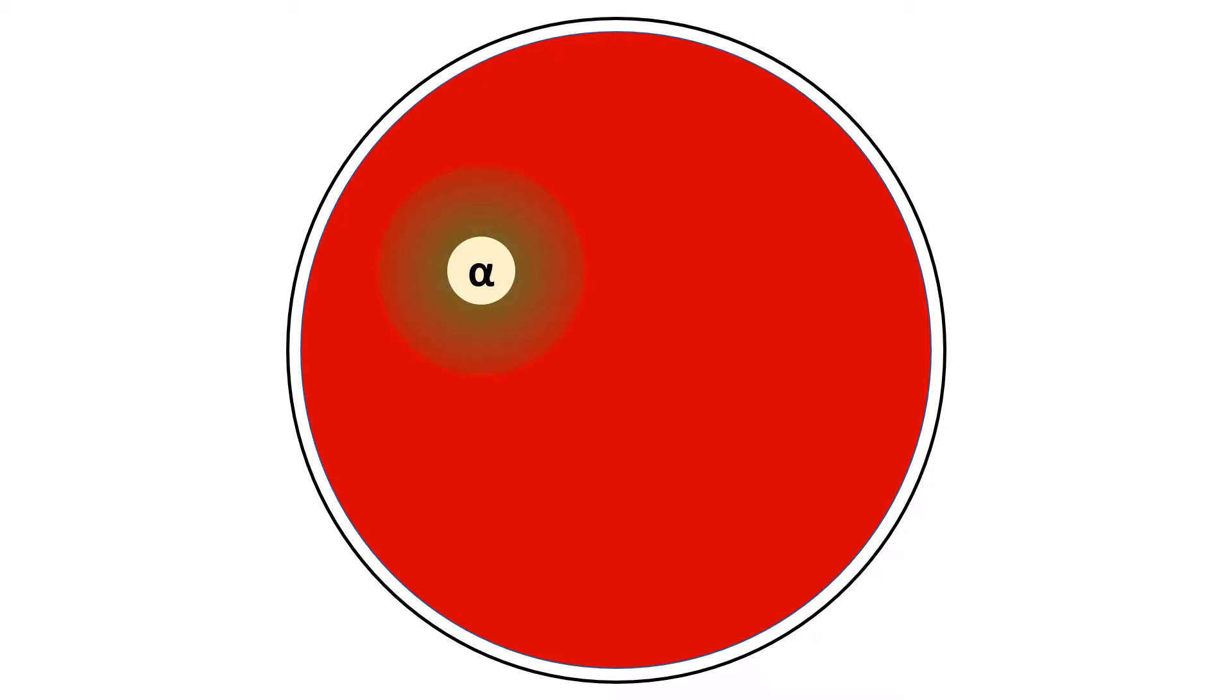There are two other classifications of hemolysis. Beta hemolysis, which is the complete breakdown of red blood cells, producing a clear region in blood agar, and gamma hemolysis, where there is no hemolysis.